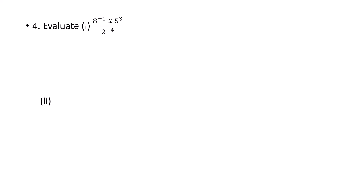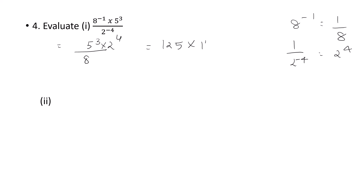Next question: evaluate 8 raised to minus 1 into 5 raised to 3 divided by 2 raised to minus 4. Now, 8 raised to minus 1 is 1 by 8, and 1 by 2 raised to minus 4 becomes 2 raised to 4 in the numerator. So we have 5 raised to 3 into 2 raised to 4 in the numerator, and 8 in the denominator.